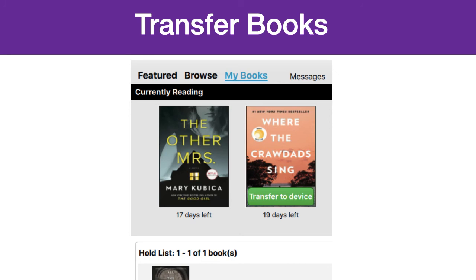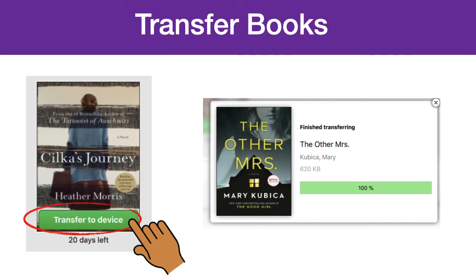Now that you have connected your eReader to your computer, you can go to My Books. Under My Books, you should see every item that you have checked out. Under each book, there should be a green button that says Transfer to Device. To transfer to your Kobo eReader, click on Transfer to Device under each title. A window will appear and it will show the progress of the download. Depending on your computer and the internet connection, the time may differ, but with a newer computer and decent internet, this should take only a few seconds.